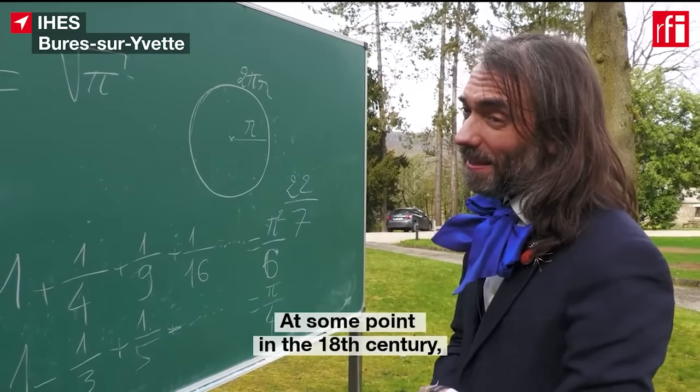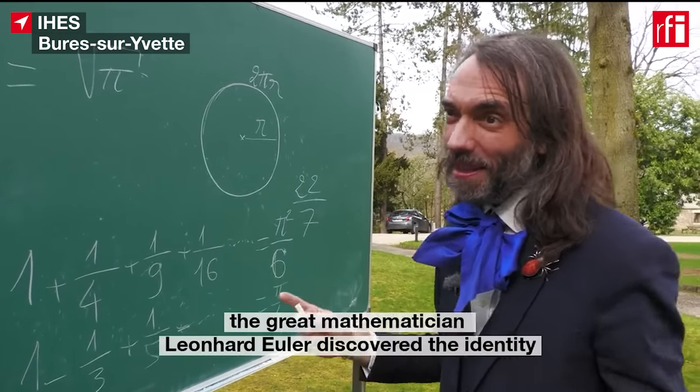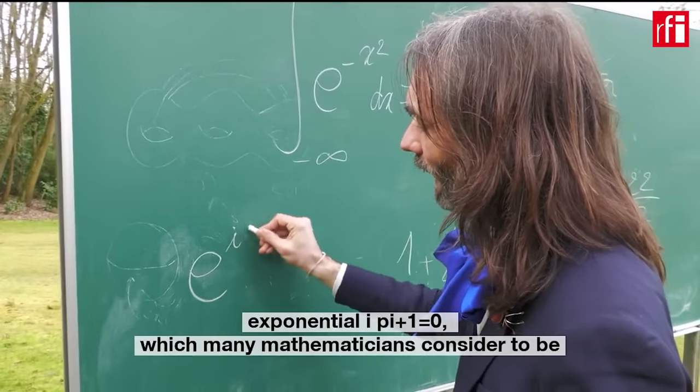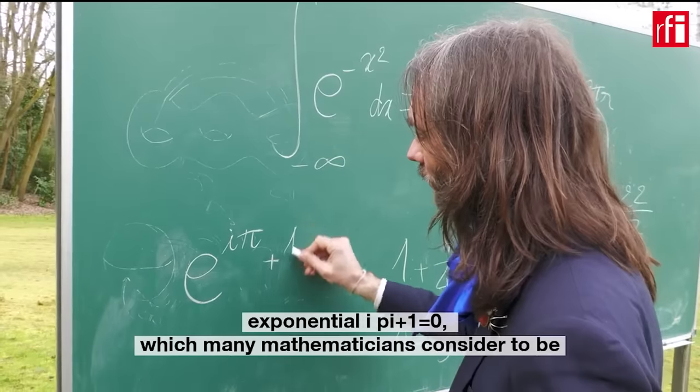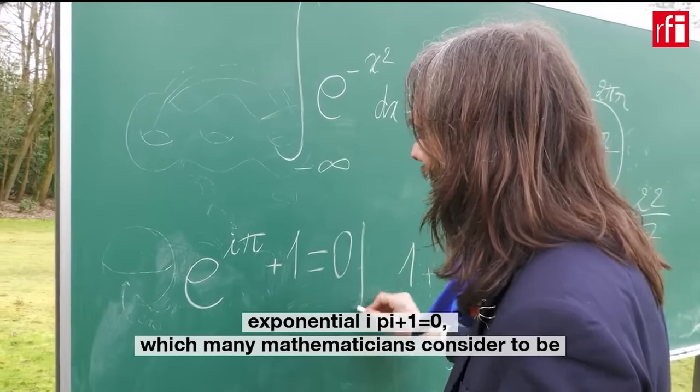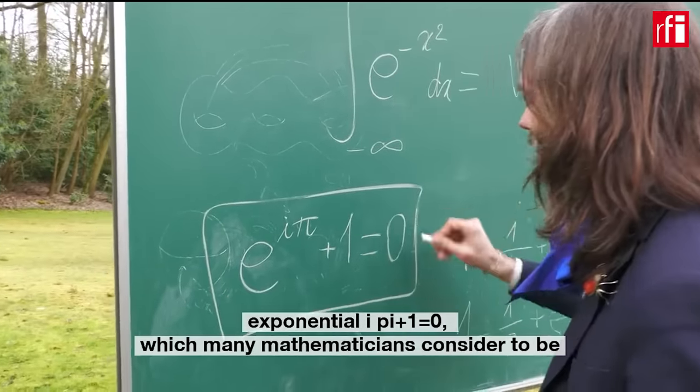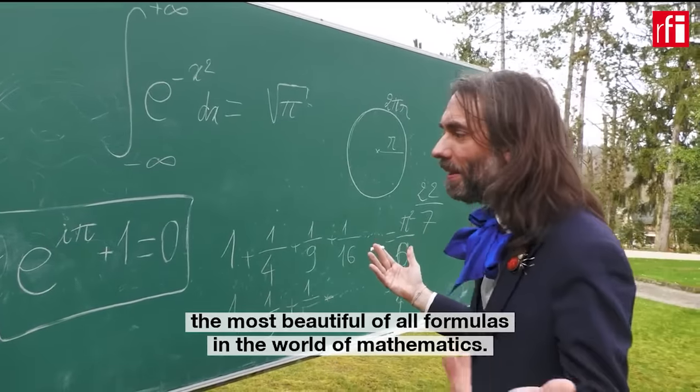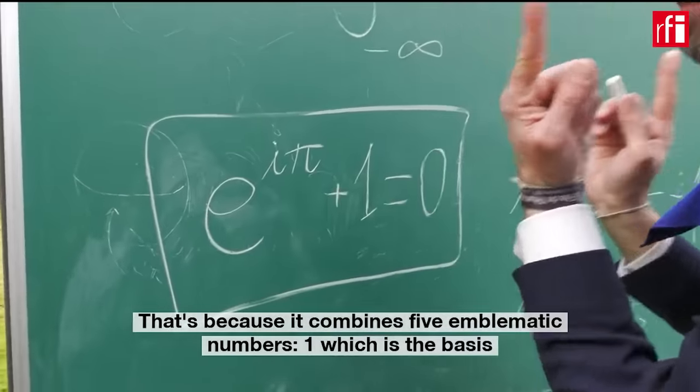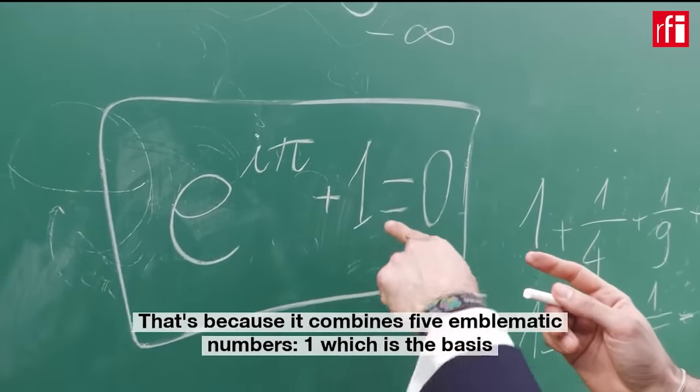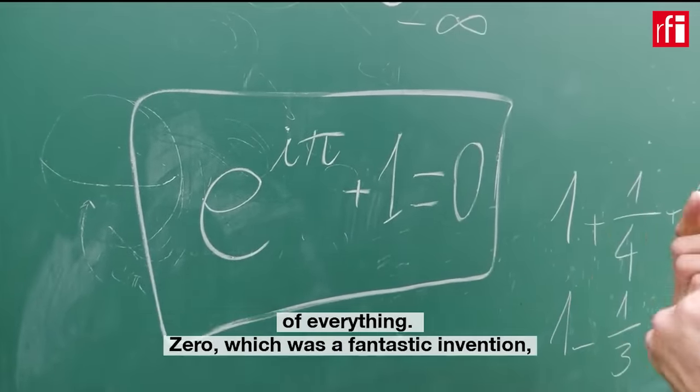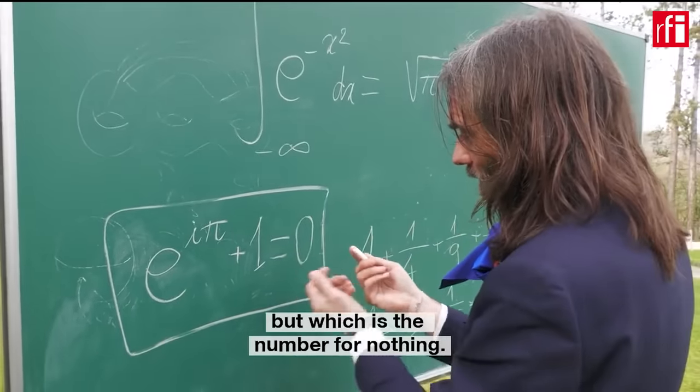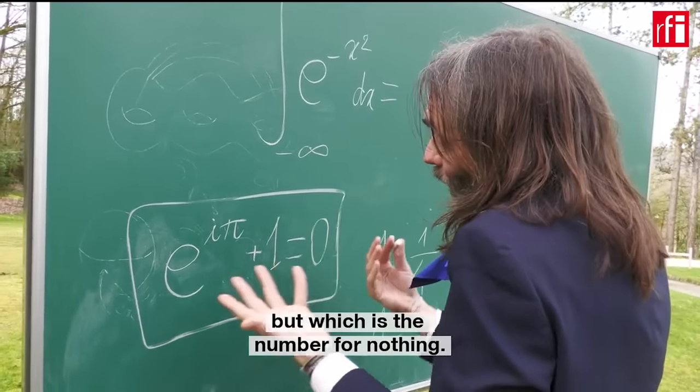Some point in the 18th century, the great mathematician Leonard Euler discovered the identity exponential iπ plus 1 equals 0, which many mathematicians consider to be the most beautiful of all formulas in the world of mathematics, because it combines five emblematic numbers: one, which is the basis of everything; zero, which was a fantastic invention but which is the number for nothing...